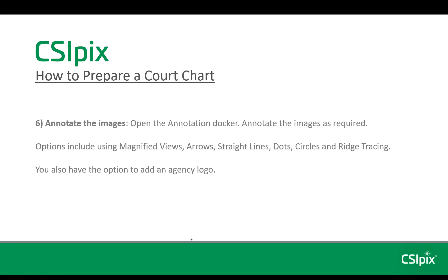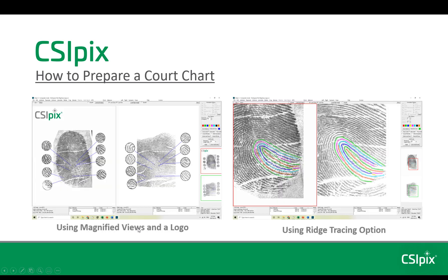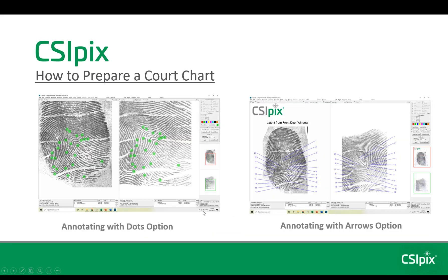Step 6 is to annotate the images. Open the annotation docker and annotate as required. Some of the options include using magnified views, arrows, straight lines, dots, circles, and ridge tracing. You can also add an agency logo. Here are some examples where I've used magnified views and inserted our company logo. On this side I've used ridge tracing. On the left side here I've used dots, and on the right side I've annotated with arrows.